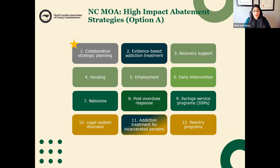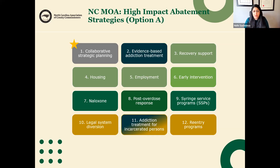Legal system diversion, addiction treatment for incarcerated persons, and re-entry programs acknowledge that some populations are harder hit by the overdose epidemic. Research from UNC shows that people leaving incarceration are 40 times more likely to die within the first two weeks of being released. So we're trying to divert people who are truly experiencing a healthcare condition away from the justice system, get medications for opioid use disorder in place before they leave jails, and acknowledge that re-entry into society is very difficult. How can we get them connected to housing, care, and medical treatment as they transition out?